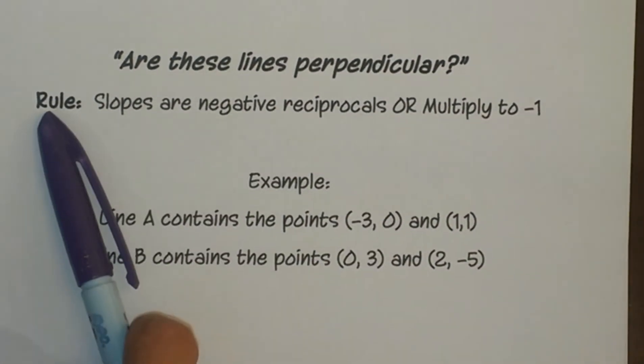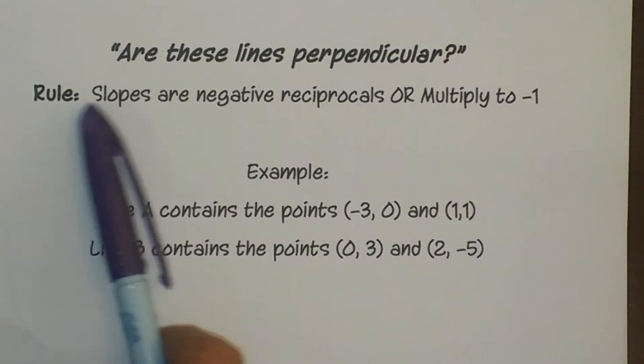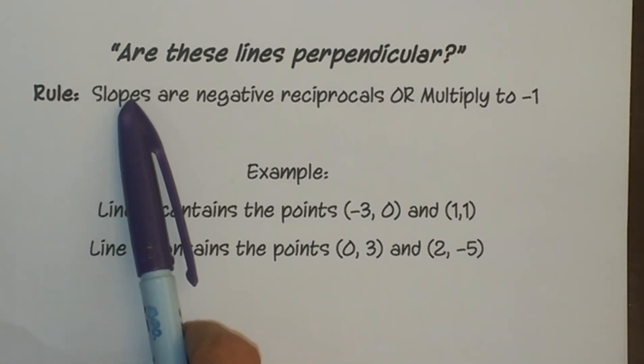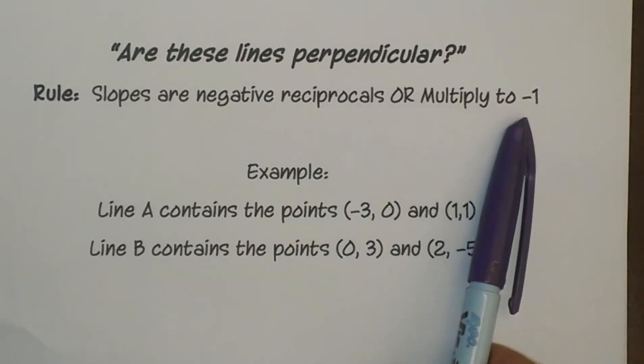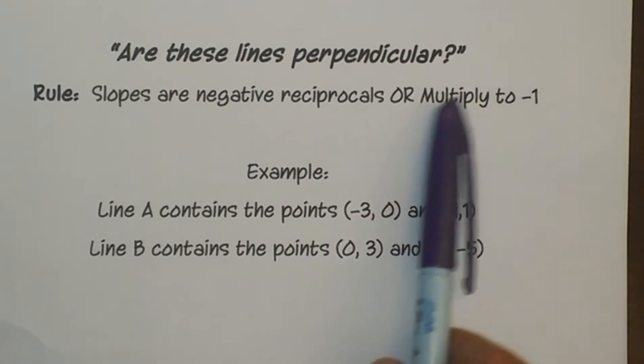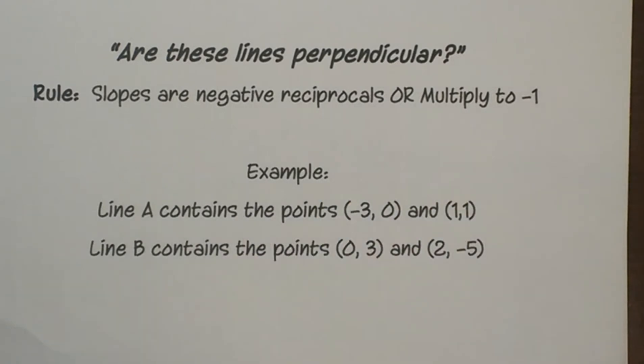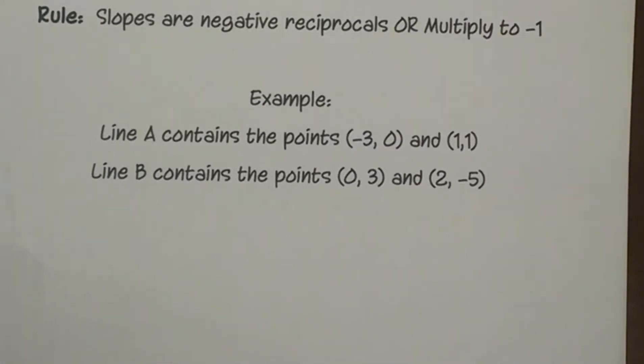So there is a rule for deciding if lines are perpendicular. We have to look at the slopes, and if the slopes are negative reciprocals of each other, or you can just multiply them together to get negative 1, if either of those is true then they are truly perpendicular. So let's give it a go.